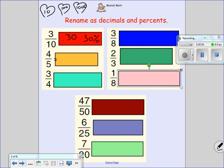4 fifths, I'm going to change this into something with a 10, times 2, times 2, is 8 tenths. It's written 0.8. It's not 8 percent, it is 80 percent.